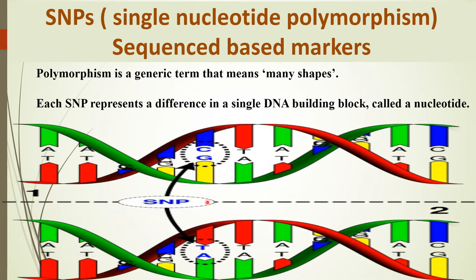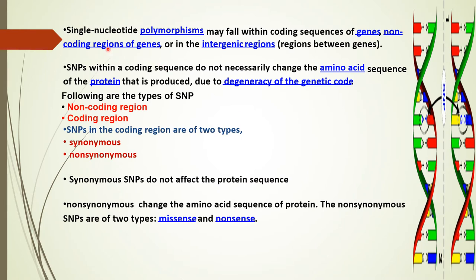A Single Nucleotide Polymorphism may fall within the coding sequence of the gene, or it could be present in the non-coding region of the gene, or it could be in the intergenic region — the region between the genes. SNPs within a coding region do not necessarily change the amino acid sequence of the protein that is produced.